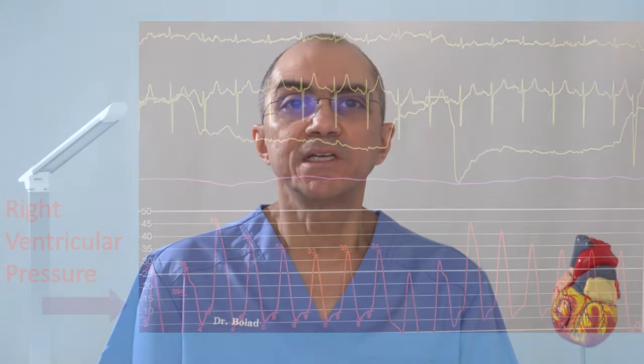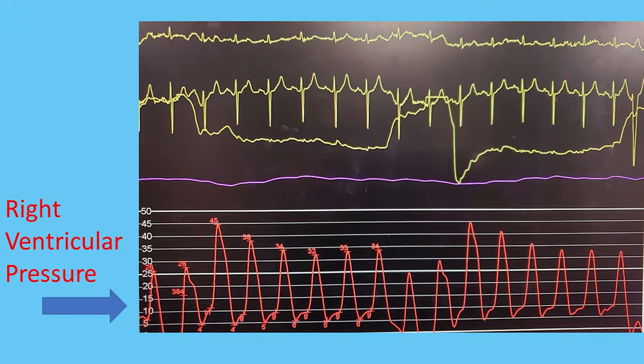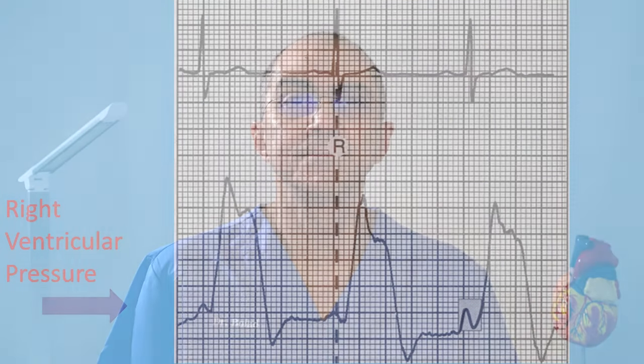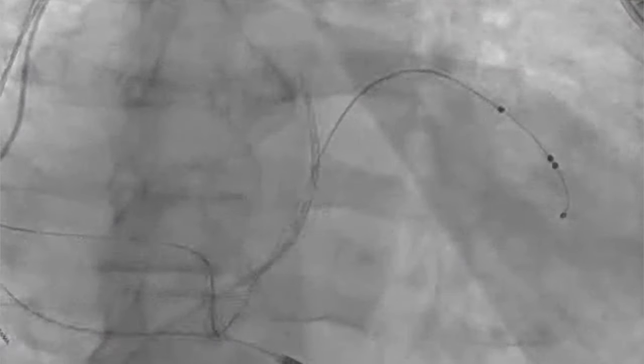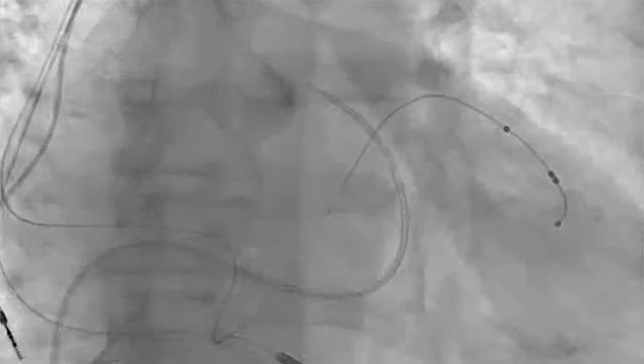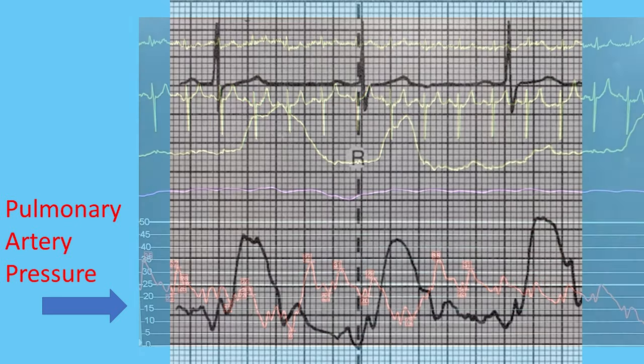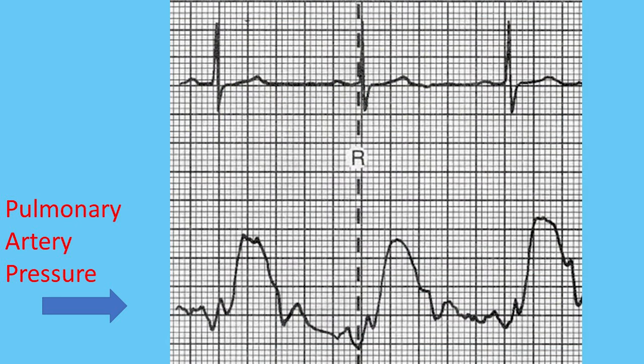I then guide my catheter to the right ventricle — this is what I see on the monitor — and here is a schematic representation of how it should look. I then pass my catheter up from the right ventricle to the pulmonary artery, as can be seen here in this video. This is the pulmonary artery pressure that I see on the monitor in front of me, and here is a schematic representation of how it should look.